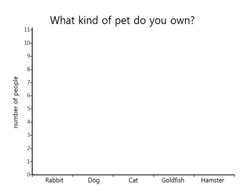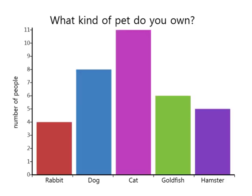Now let's take a look at the information that was collected. We have a different bar for each type of pet. We can tell that four people have rabbits, because this bar goes up to the number four. How many people have dogs? Pause the video and see if you can figure it out. If you said eight, you would be correct.